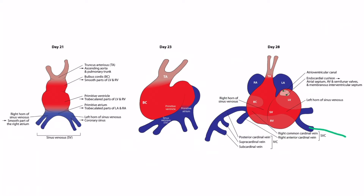Blood continues to move up the various veins into the sinus venosus, then goes to the atria and passes through a rudimentary atrioventricular canal into the left ventricle, and finally out the truncus arteriosus. Around this time, endocardial cushions develop. These grow and divide the heart so that there are two separate canals — a right atrioventricular canal and a left atrioventricular canal. Eventually, the endocardial cushions give rise to the atrial septum, the valves of the heart, and the membranous portions of the interventricular septum.